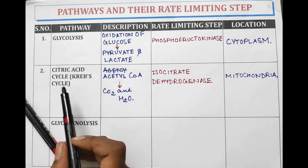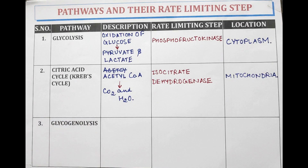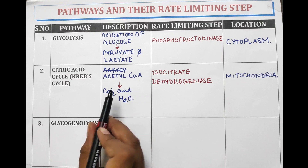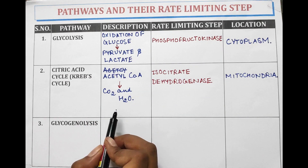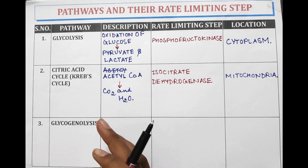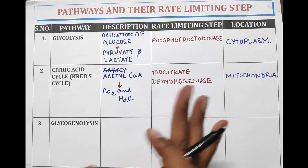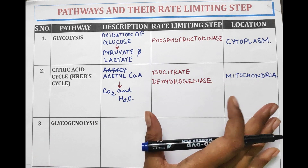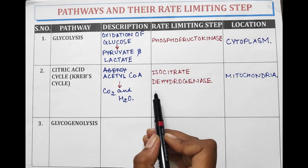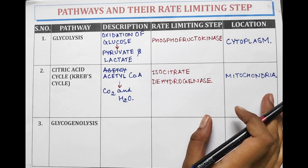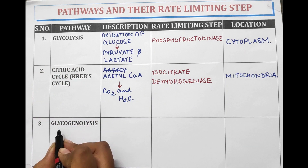Citric acid cycle is also known as Krebs cycle and it is the conversion of acetyl coenzyme A into carbon dioxide and water. The rate limiting step is isocitrate dehydrogenase, and the location is mitochondria.